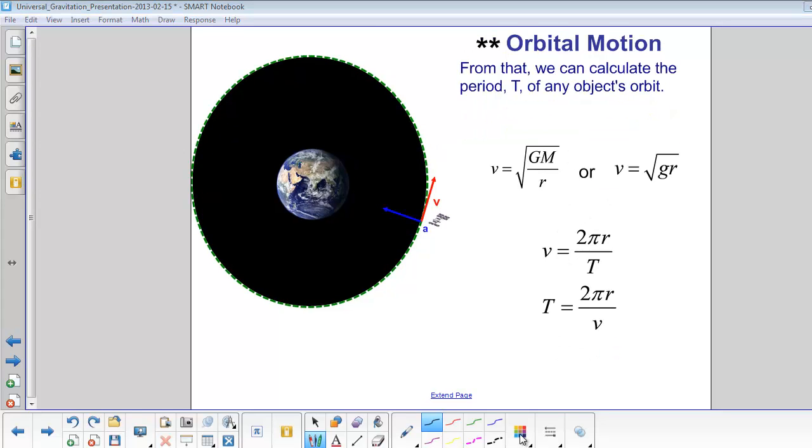From that, we can calculate the period T of any object's orbit. We can either use the equation we just came up with, square root of GM over r, or we can set the gravitational field equal to the centripetal acceleration and get v equals square root of GM over r.